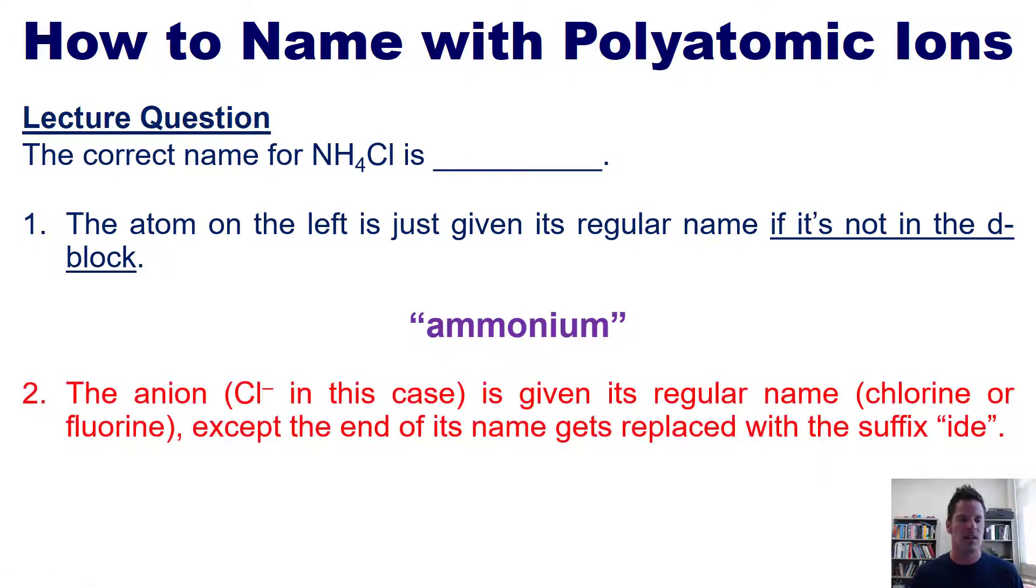Then step two. The anion, which is Cl- in this case, is given its regular name—chlorine, fluorine, bromine, whatever—except I replace the end with the suffix '-ide.' So in this case, I've got chlorine, so I'm going to call it chloride. The correct name for this polyatomic ion-containing molecule is ammonium chloride. And as I've stated before, we never use di, tri, mono, tetra, penta, any of those prefixes with ionic compounds, even if they are polyatomic ions.